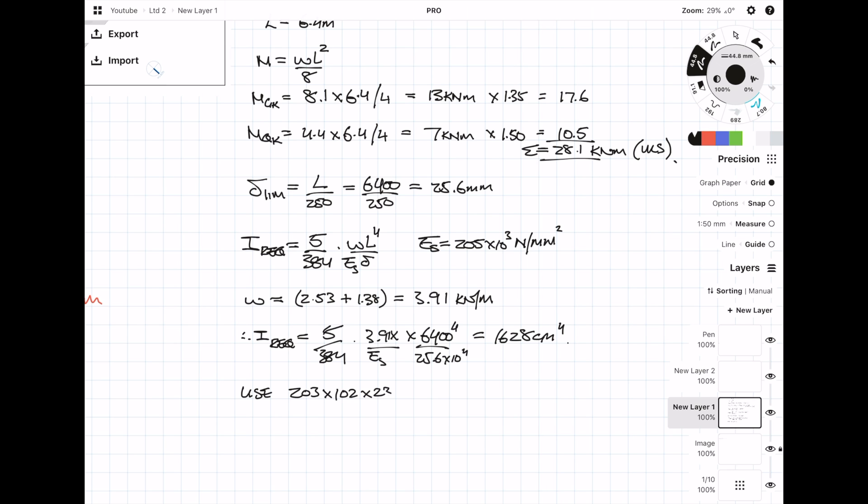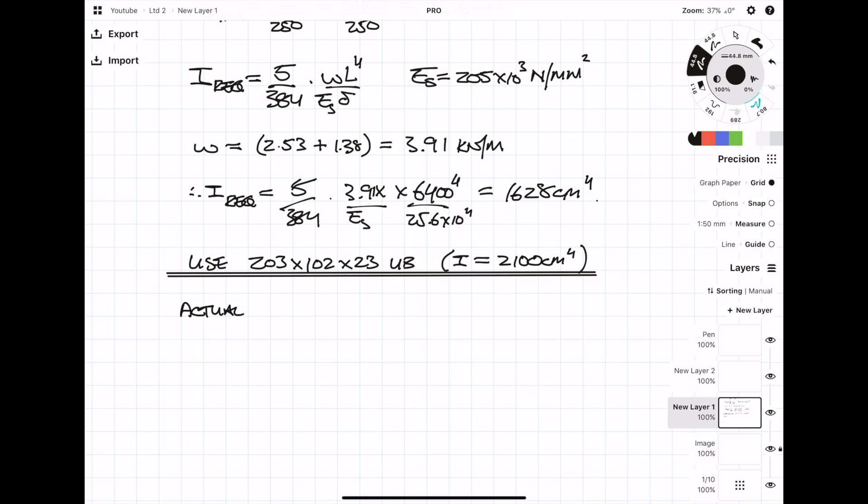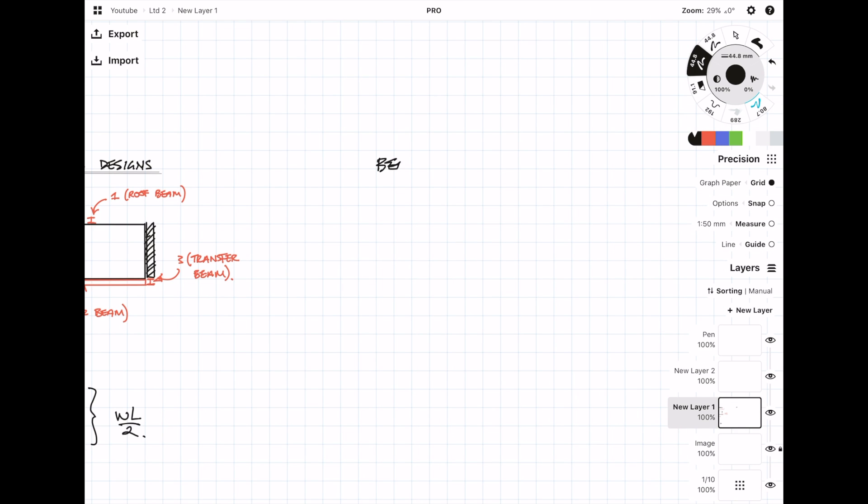If we specify a 203 by 102 by 23 UB, which has an I value of 2100 cm⁴—now normally I won't do this, but I'm actually going to calculate the actual deflection with the specified beam. All you do is plug in the numbers into that equation, except you're finding the deflection instead of I. This is going to be useful later, so make sure you keep watching.